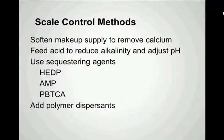Scale refers to the mineral impurities that may concentrate and over-concentrate to form scale in heat transfer areas like the chiller condenser. One way to protect against that is to soften the make-up to remove calcium. Water treatment systems are readily available that make use of traditional water softeners to remove the calcium from the make-up, so it doesn't impose a limiting factor on the operation of the cooling tower.